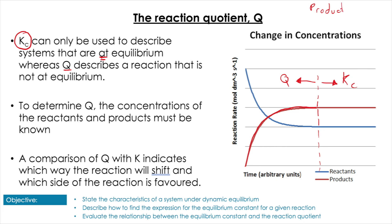Comparing Q and K tells us which way the reaction will shift. Using concentration of products over concentration of reactants and comparing Q to K tells us whether the reaction wants to move towards giving more products or more reactants.